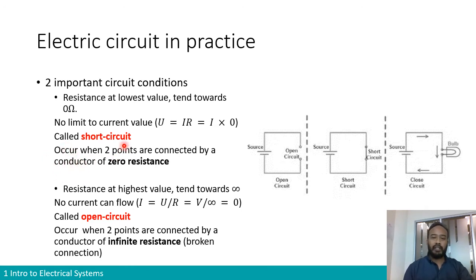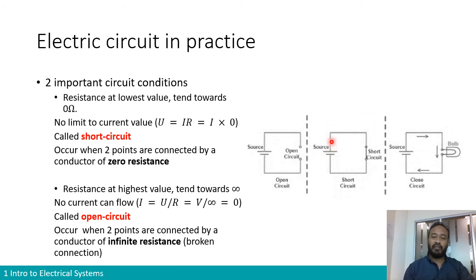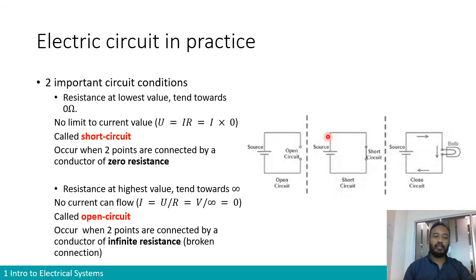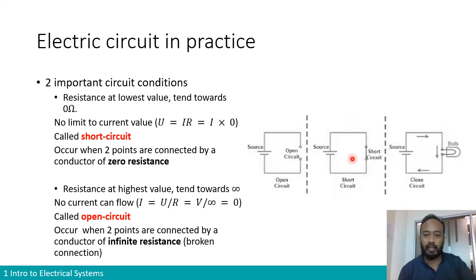A short circuit occurs when R tends toward zero, meaning two points are connected by a conductor of zero resistance. If you connect wires between the positive and negative terminals of a power supply without any load in between, you create a short circuit with a very high current. The conductor can be burnt because of the high current. You may also damage your power supply. Always ensure there is a load between the positive and negative terminals to consume energy.